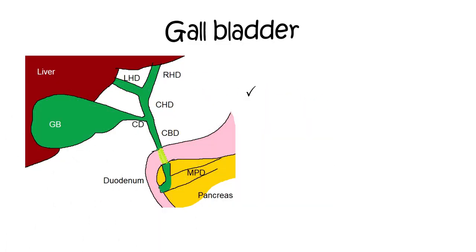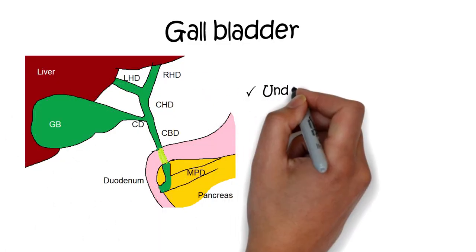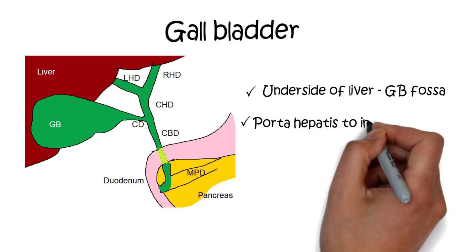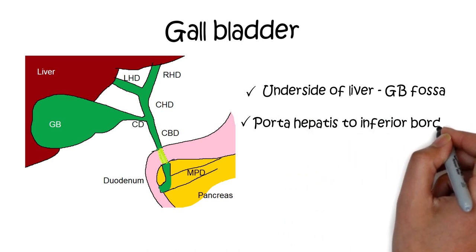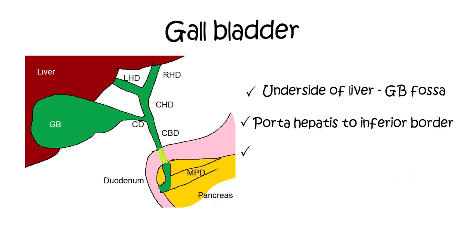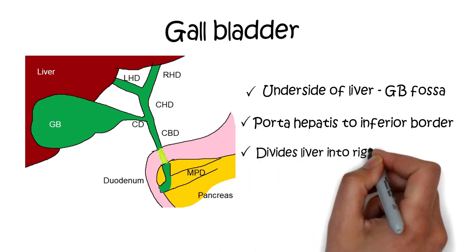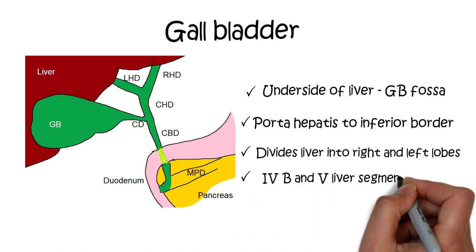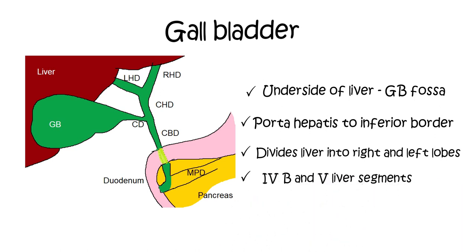Gallbladder Anatomy. The gallbladder is present on the underside of the liver in the main liver scissura, that is in the gallbladder fossa. The gallbladder fossa extends from the right end of the porta hepatis to the inferior border of the liver. A line from this fossa to the inferior vena cava divides the liver into the right and left liver lobes. The gallbladder fossa corresponds to liver segments 4B and 5.